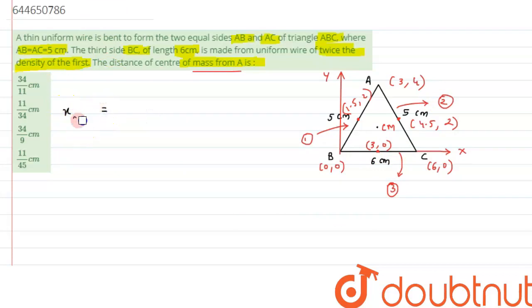So x_cm that is x coordinate of center of mass can be written as m1 x1 plus m2 x2 plus m3 x3 and the whole divided by m1 plus m2 plus m3.